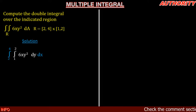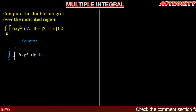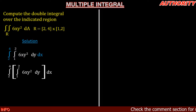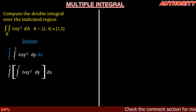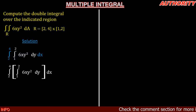Since we end with x, before dx we'll have dy. So we write: integral from 2 to 4, and another integral from 1 to 2, of 6xy² dy dx. We split this into the inner integral — in the bracket — and the outer integral outside the bracket.